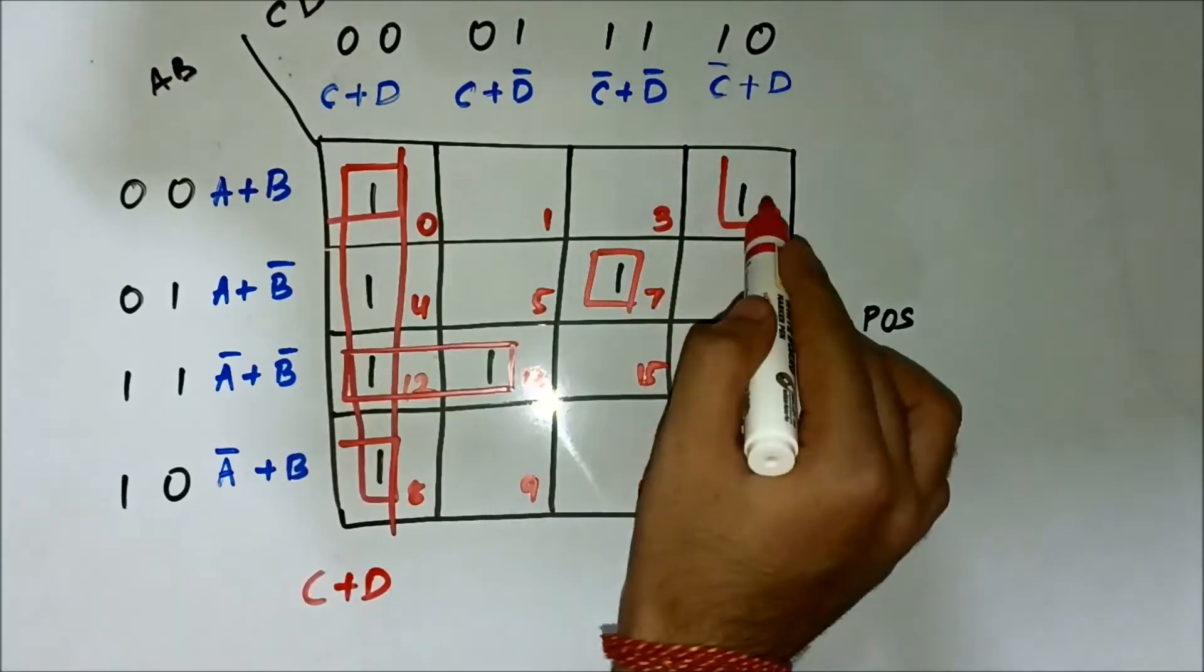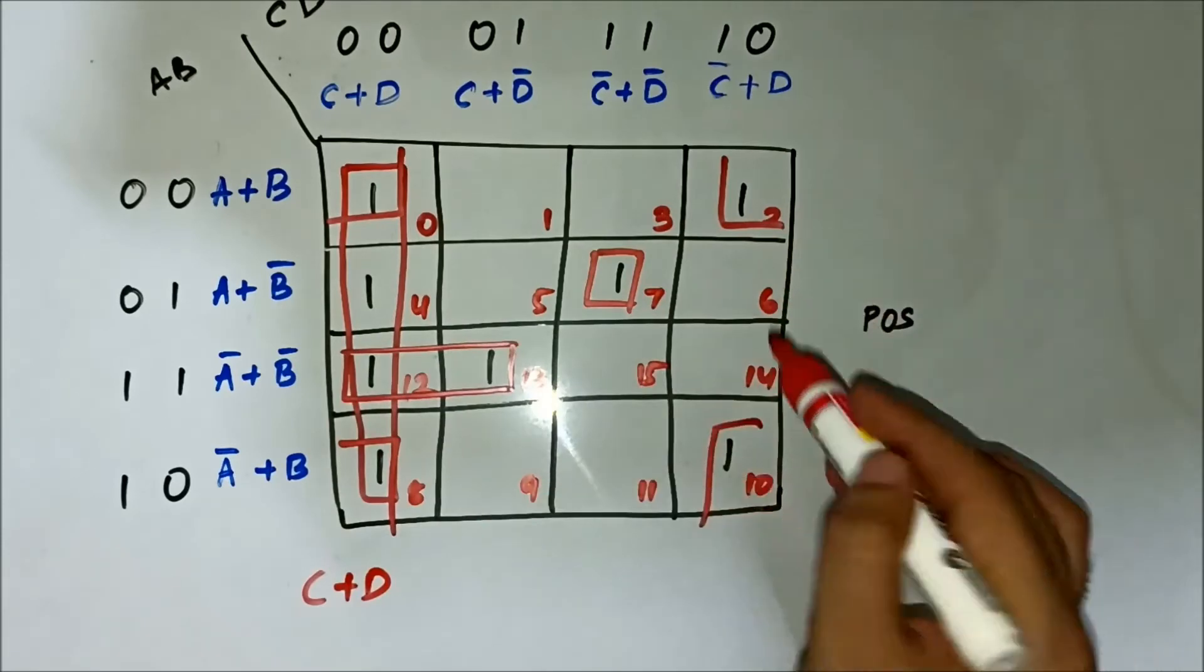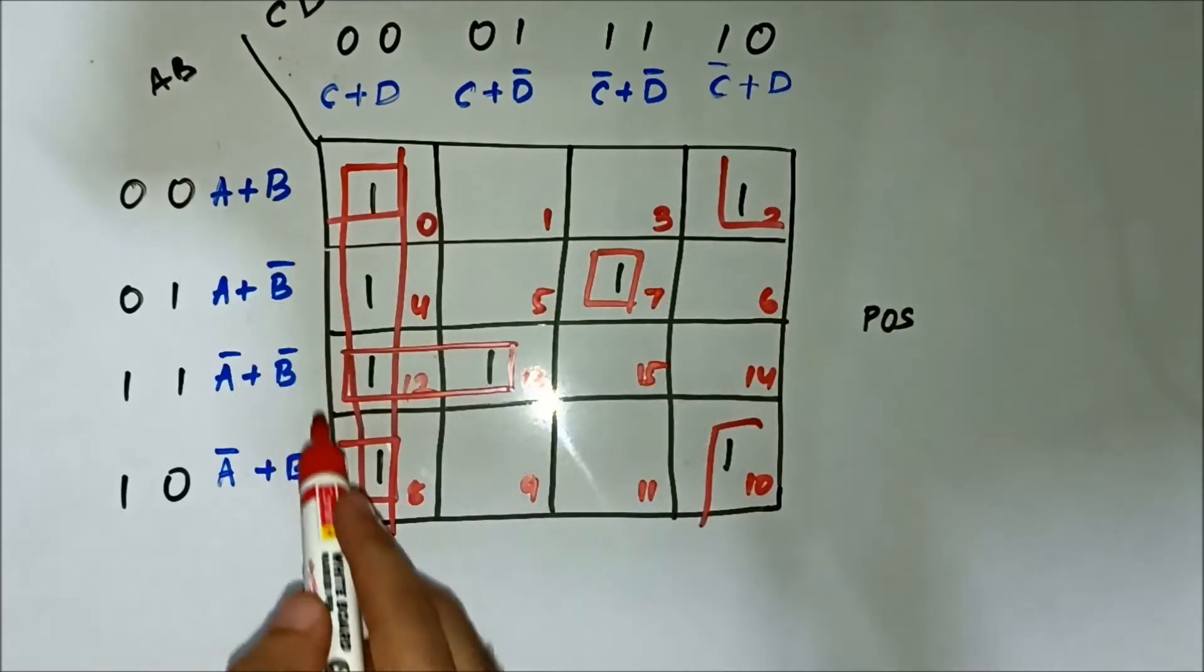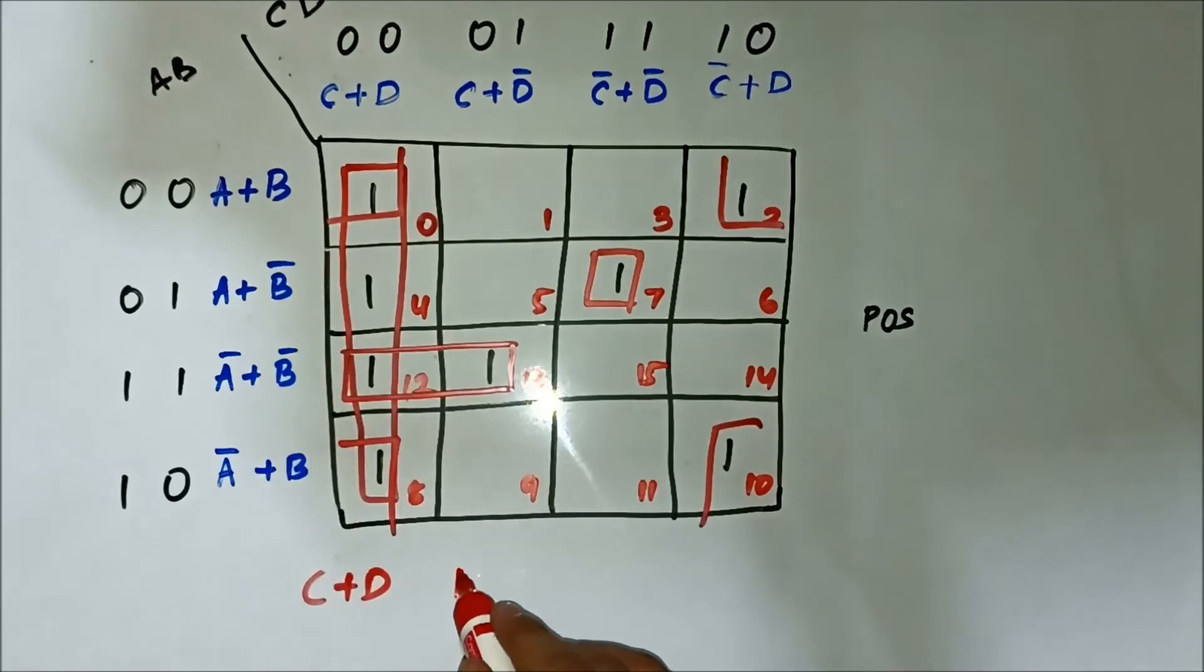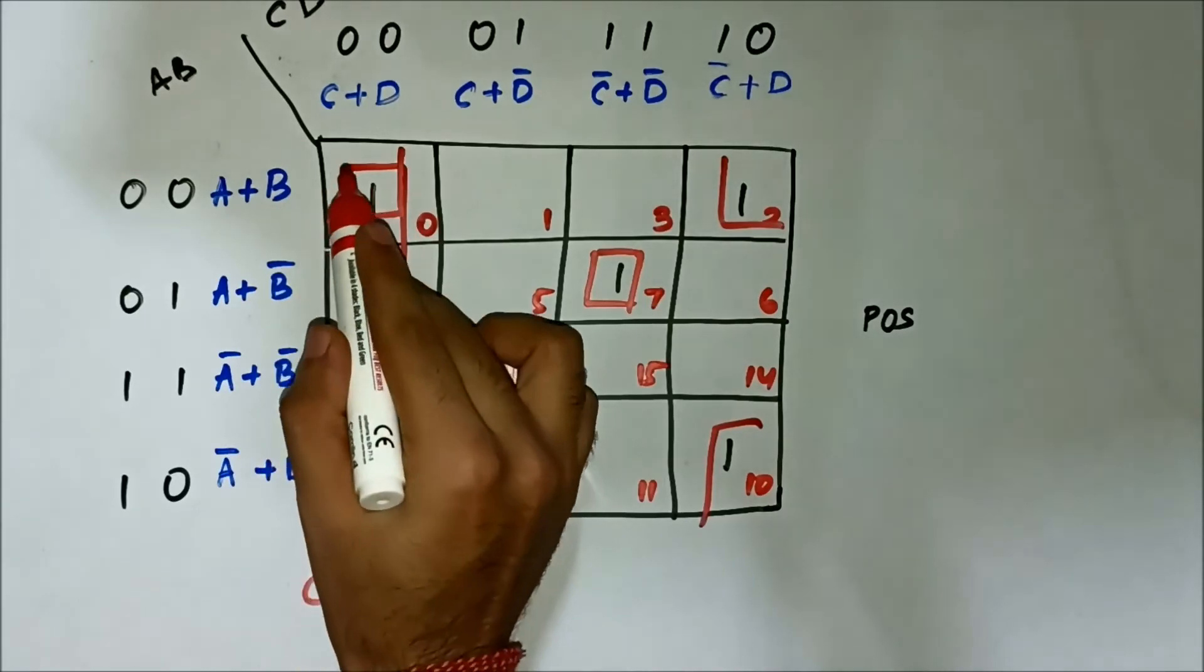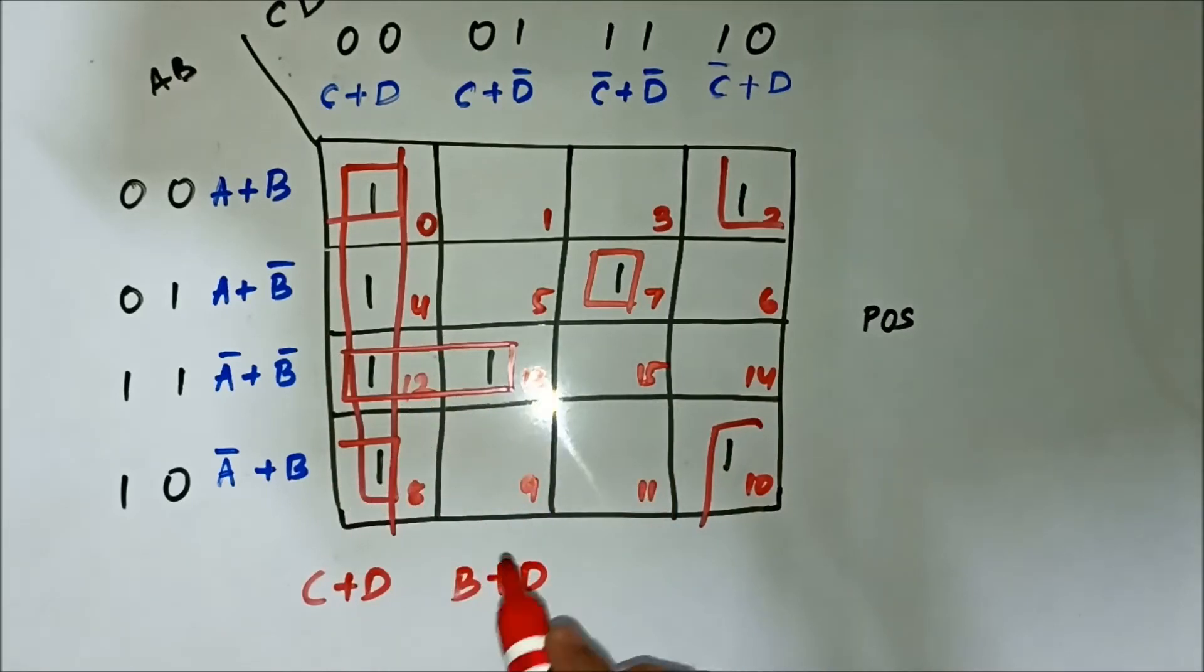For this corner cell quad, 0, 2, 8 and 10. In the horizontal side, we have B bar common. In the vertical side, we have D bar common. So B bar plus D bar.